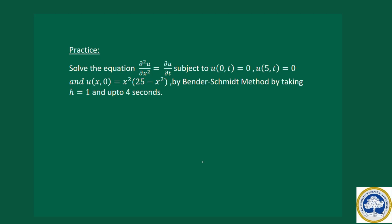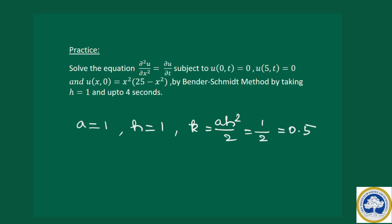Now for the practice problem: solve ∂²u/∂x² = ∂u/∂t with given boundary conditions, taking h=1, up to 4 seconds. Here a=1, h=1, so k = a·h²/2 = 0.5. Find the solution up to t=4, starting from 0 with k=0.5. Try this yourself as practice using the same Bender-Smith averaging approach.